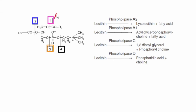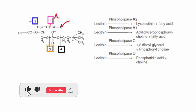Phospholipase A1 acts on the ester bond at position one of glycerophospholipid and forms acyl glycerophosphorylcholine and one fatty acid.